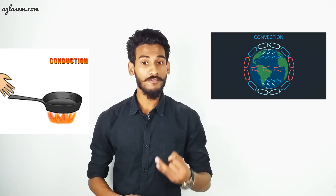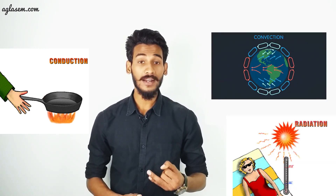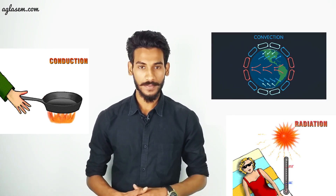There are three ways in which heat can flow from one object to another: conduction, convection, and radiation. This was all for this chapter overview; now let's move to the question answers.